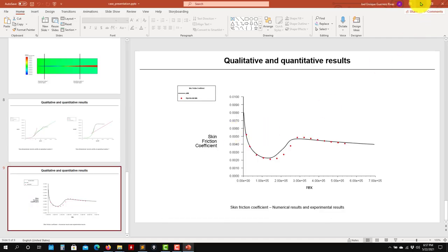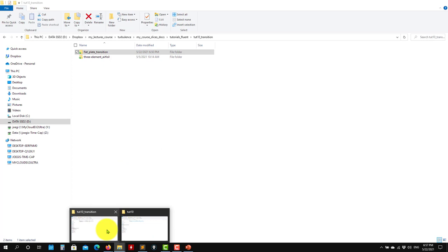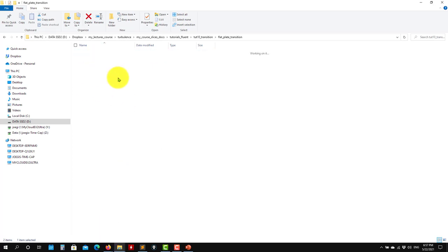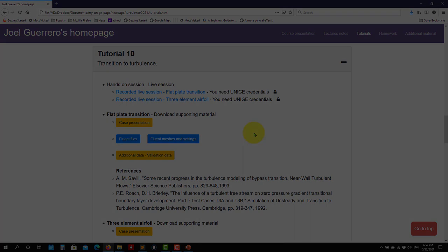That's all for the introduction of this case. As you download the cases, you have the Fluent files, the Fluent meshes and settings, and also validation data. You should get the Fluent case ready to run, the validation data for the velocity profile, and clean meshes. That's all for the moment. Thank you for your attention, and see you in the next video. Bye.